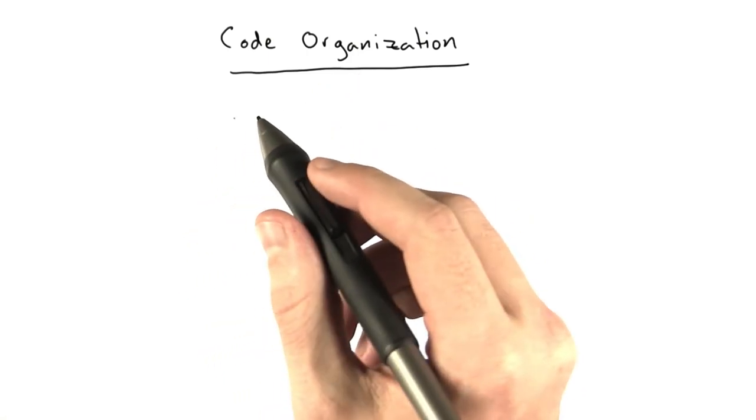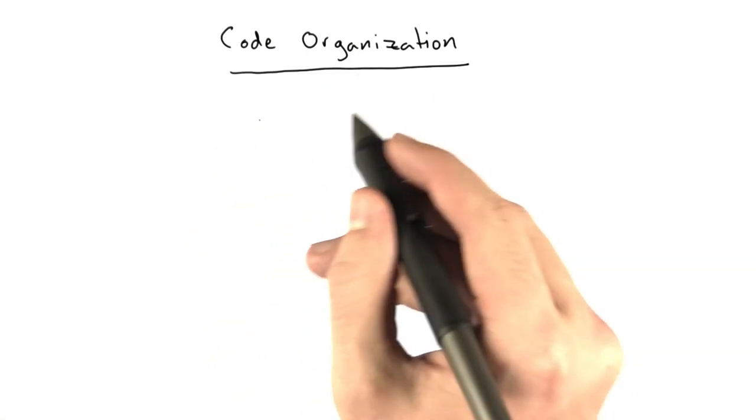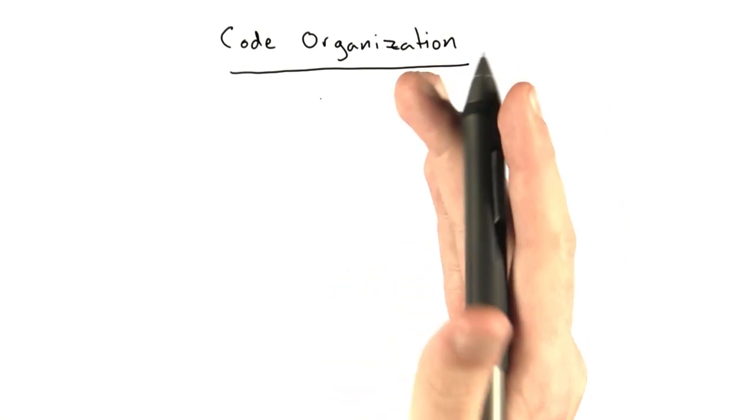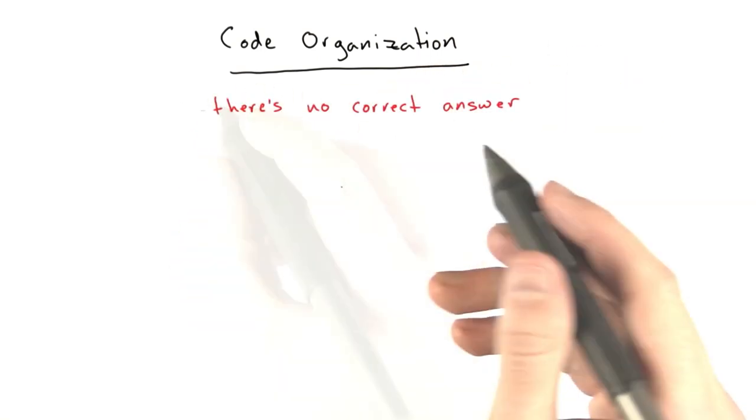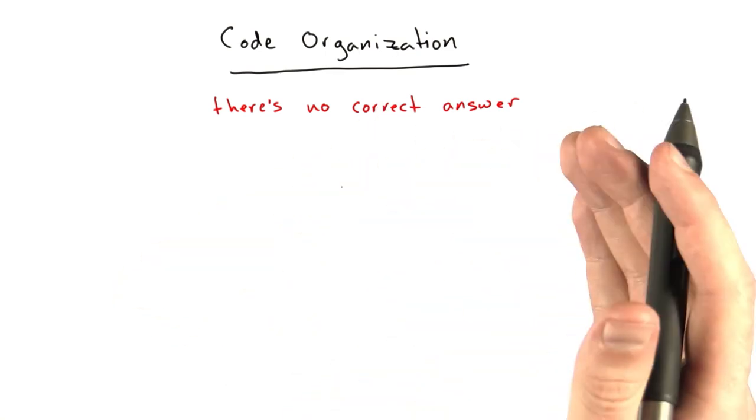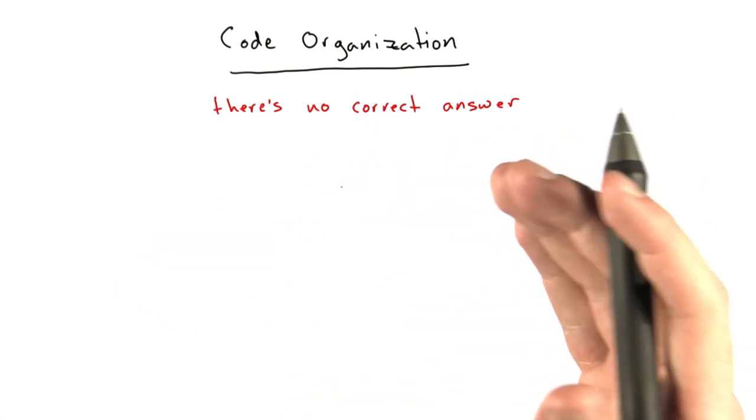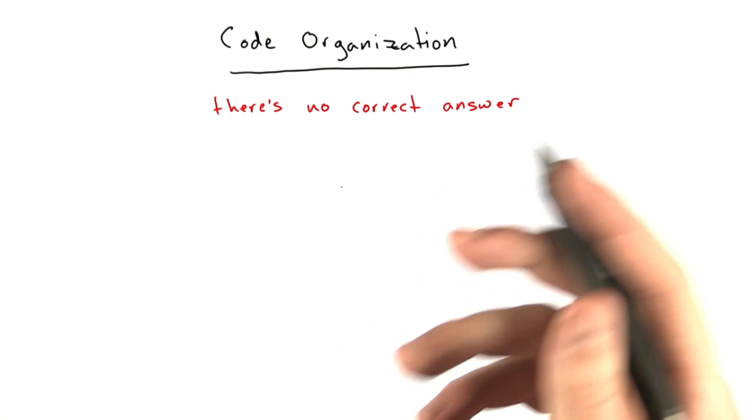One thing that's come up a lot in this class, a question I've seen a lot on the forums, is how do I organize code? You don't want to keep all your stuff in one Python file. What's the correct way to organize things? The first thing I have to say is there's no correct answer. Code organization, whether you're writing web apps or any other type of software, is something that comes from experience and you develop your own style.